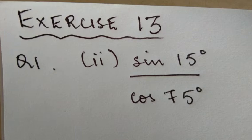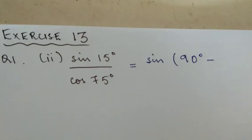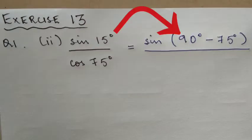Let's look at sin 15°. We will try to put it in terms of 90 minus. So 15 can be written as 90 minus 75. Therefore, sin 15° = sin(90° - 75°).